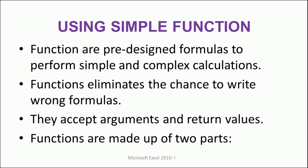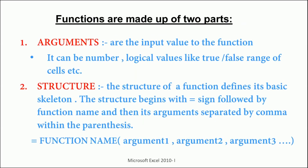Functions accept arguments and return a value. You will always see brackets or parentheses in front of the function name - inside that bracket you pass some arguments, and those arguments return some value. Functions are made up of two parts: argument and structure. Structure is: equal-to sign, then function name, then parentheses, and within those parentheses there will be the argument.